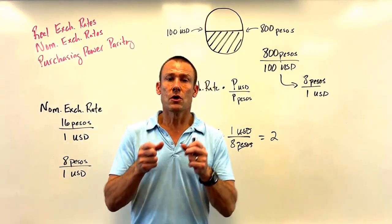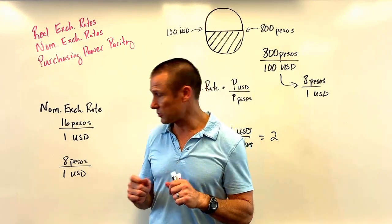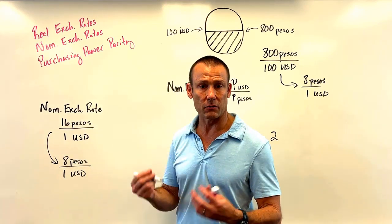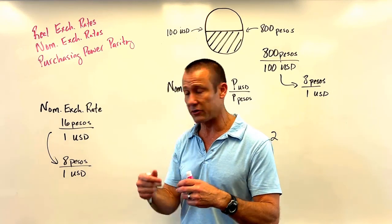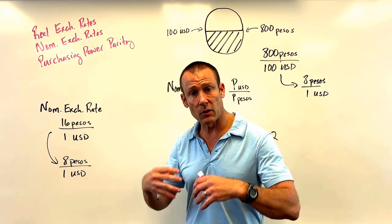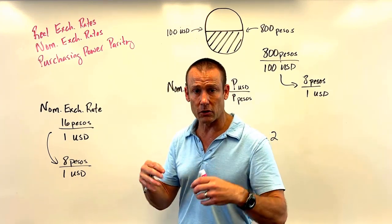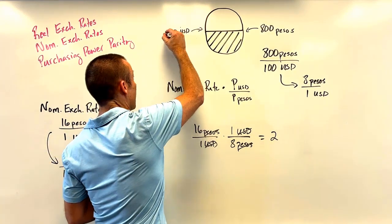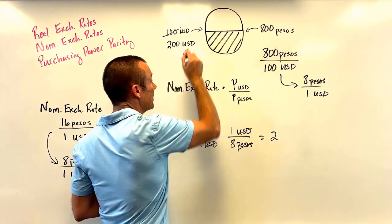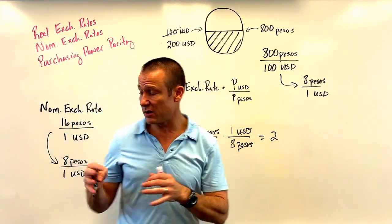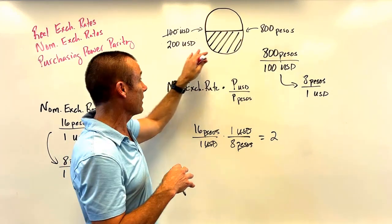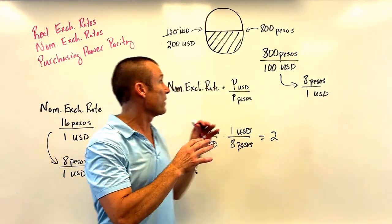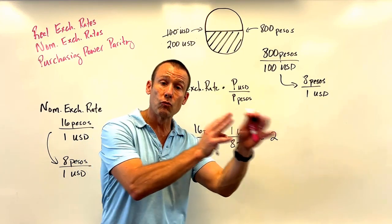Now let's have the USD depreciate in nominal terms: instead of 1 USD buying 16 pesos, it now only buys 8 pesos. The USD has depreciated; the peso has appreciated. So — what's going to happen to net exports? Don't answer yet. The economist says: I can't answer that until you tell me what happened to price levels. Let's say the market basket in the US now costs 200 USD — prices doubled — while Mexico's stayed at 800 pesos.